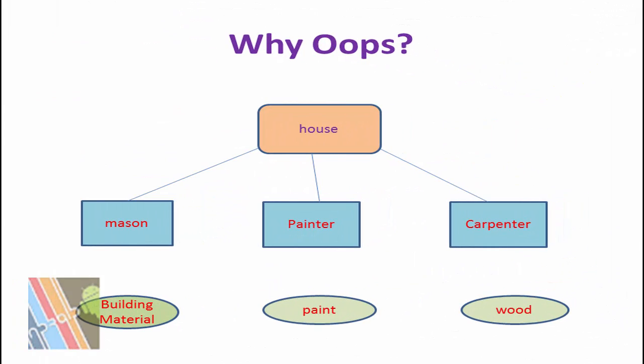Now, why object-oriented programming? To understand it, I am going to give you a simple example. Suppose you want to build a house and you need three types of laborers: one is a Mason, one is a Painter, and one is a Carpenter.